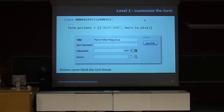The framework is easy to customize. First, you can add actions to forms very easily by adding functions to a form actions attribute of the admin class. Here we have the burn to disk function that takes a single argument, the movie, and burns it to disk. You get a button on the form and when the user presses that button, the function gets called.